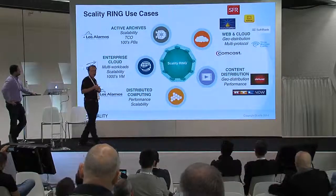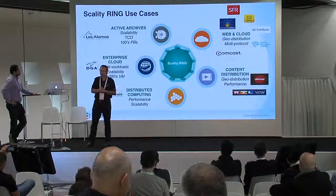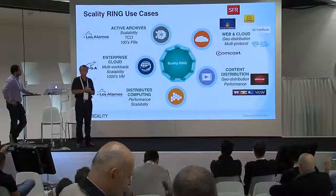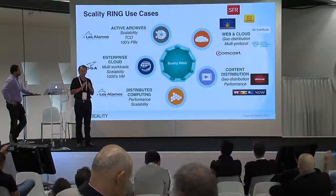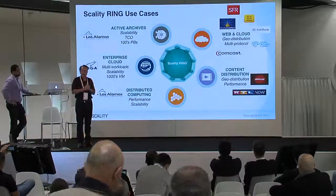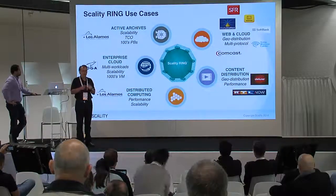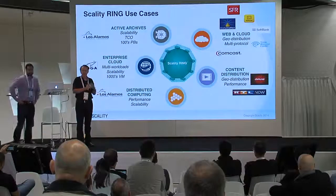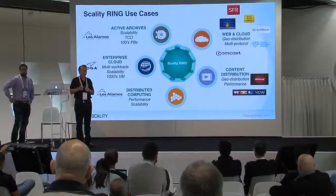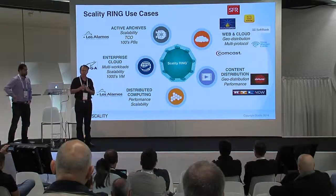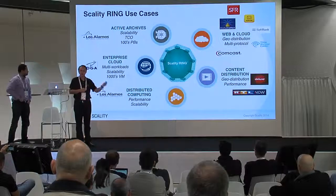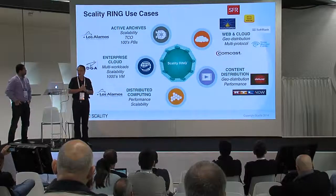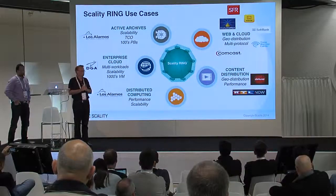Where are the use cases? What kind of deployments are customers using the Scality Ring for today? It's quite a variety. One is an active archive — an emerging category in industries like media where people generate lots of video and image content. Typically they've put these on tape in the past, but they'd like a more online accessible archive — something that builds up over many years but allows quick retrieval and instant access to data. We're starting to see deployments in the hundreds of petabyte scale for some of these active archives.